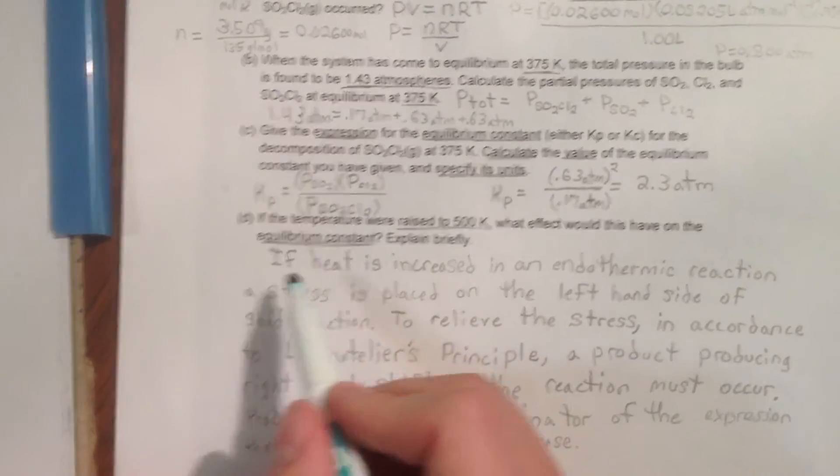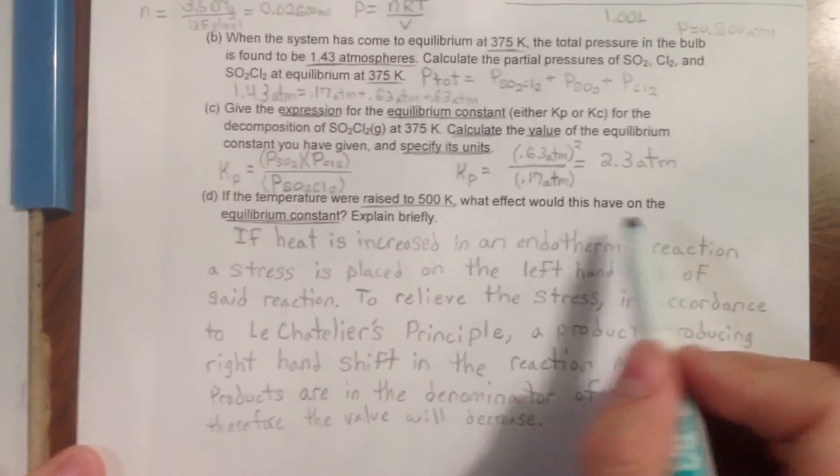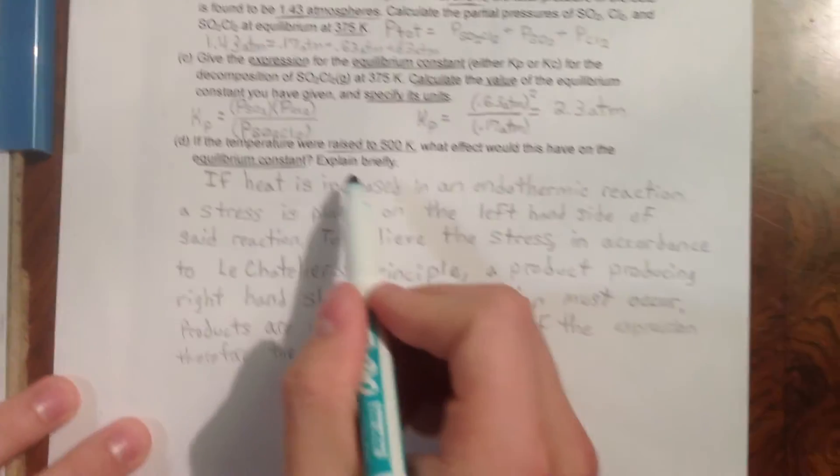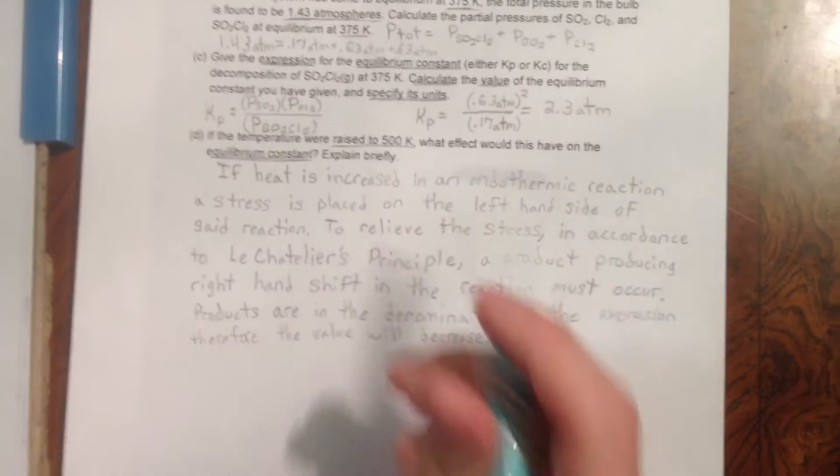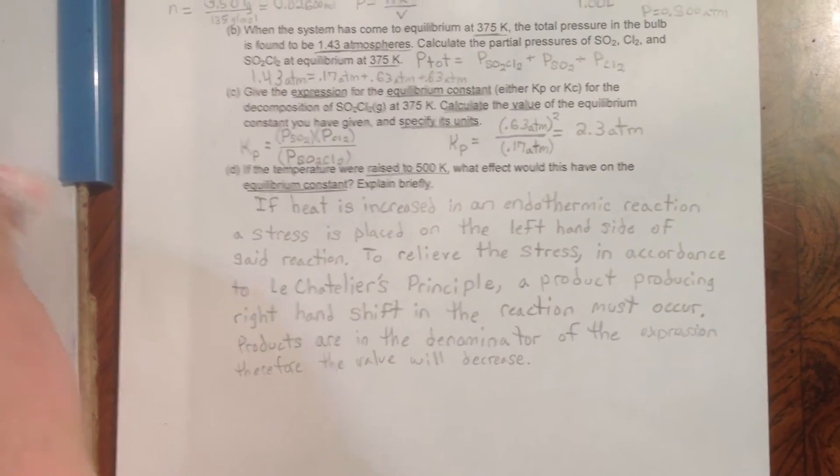Part D. If the temperature were raised to 500 degrees Kelvin, what effect would this have on the equilibrium constant? Explain briefly. This short answer requires knowledge of Le Chatelier's principle.